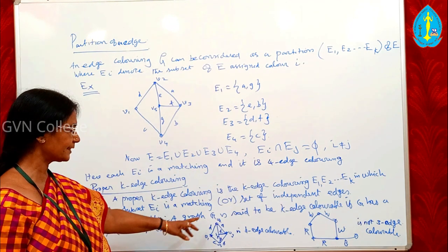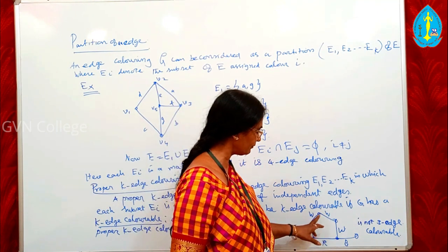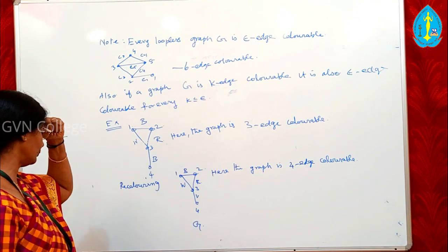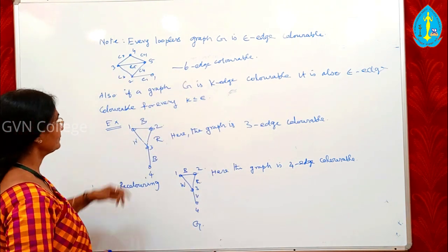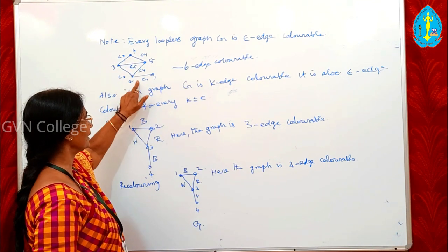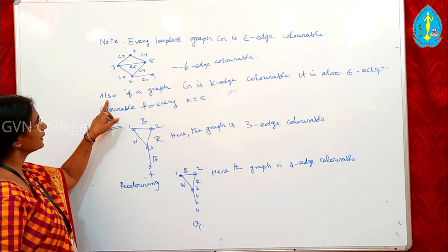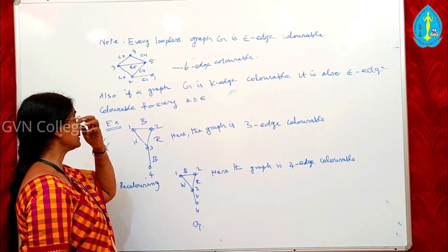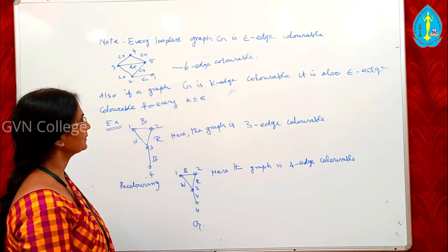A graph G is said to be K edge colourable if G has a proper K edge colouring. The above figure is 4 edge colourable. Every loopless graph G is epsilon edge colourable — that is, if we have epsilon edges, each edge can have a different colour, so it is epsilon edge colourable. Also, if a graph G is K edge colourable, it is also K' edge colourable for every K ≤ K' ≤ epsilon.